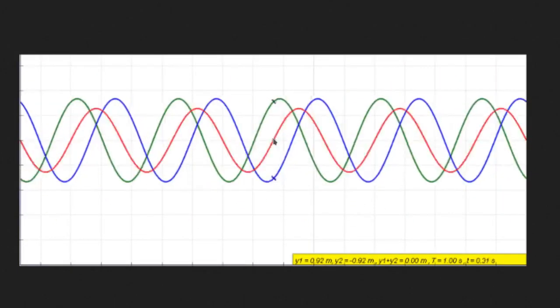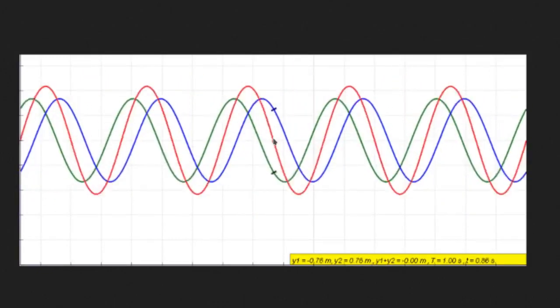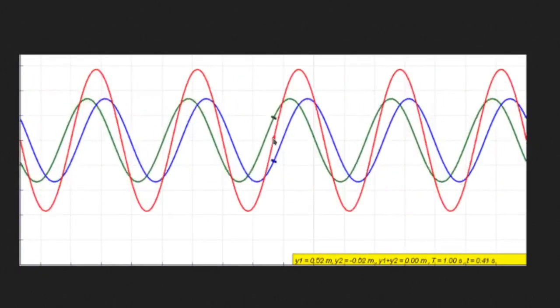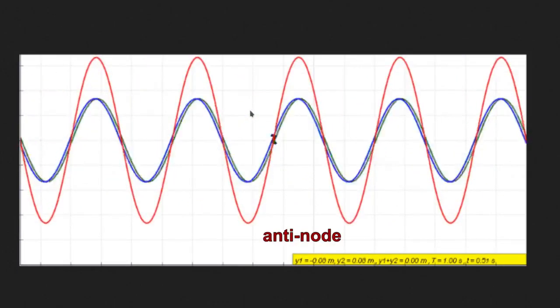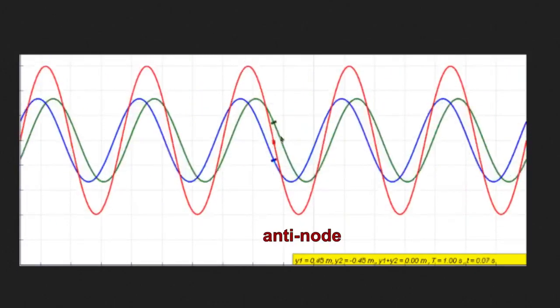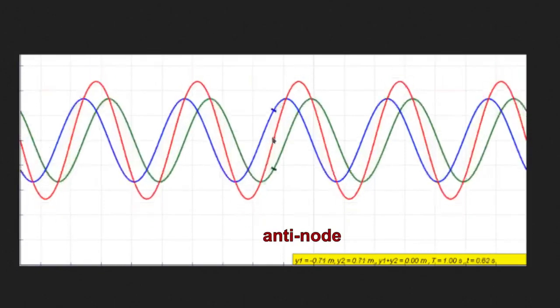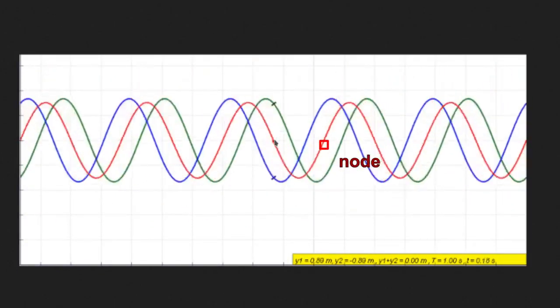You see, it's not going anywhere, but there are places where we have maximum motion. These are called anti-nodes. There are places where nothing moves at all. Those places are called nodes.